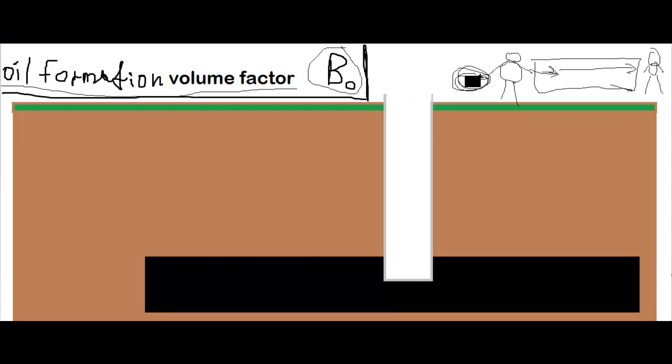Actually it represents, so B0 is the relationship between the volume of portion of oil inside the reservoir, so what we call it, volume reservoir, and to the volume of the same portion of oil at the surface condition, so we put it like surface.